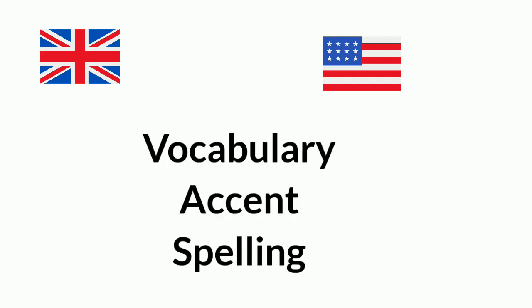Without further ado, let's begin. We have all wondered how Sherlock, Harry Potter and James Bond have this amazing British accent and how it is different from the American accent. The truth is American English and British English have numerous varieties. I will try to focus on the standard non-regional English — the kind you hear on BBC and CNN. The main differences are vocabulary, accent, and spelling.